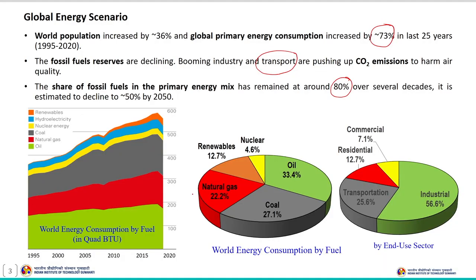This figure shows the share of fossil fuel consumption trend in India's primary energy mix, which is close to around 80 percent. This consumption pattern is almost constant over several decades, but it is estimated to decline to around 50 percent by 2050. This gives information about the global energy scenario.